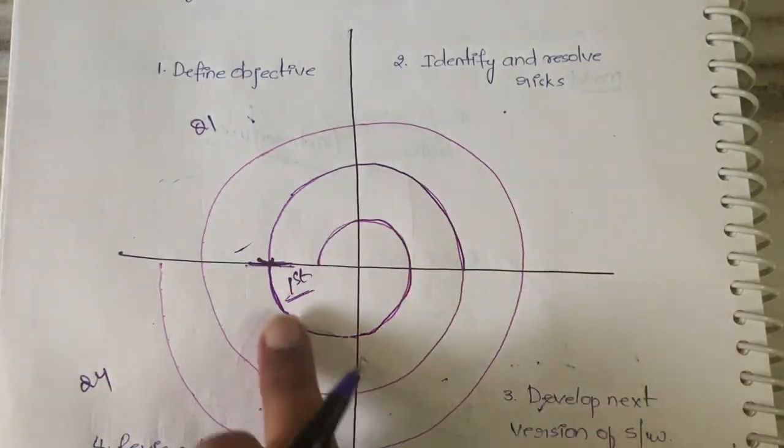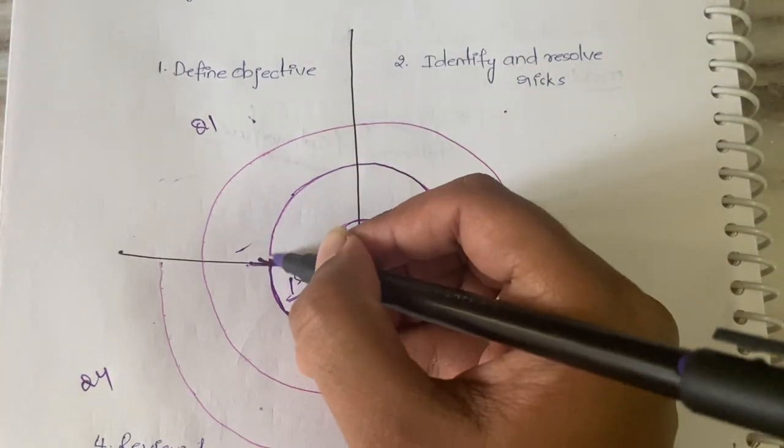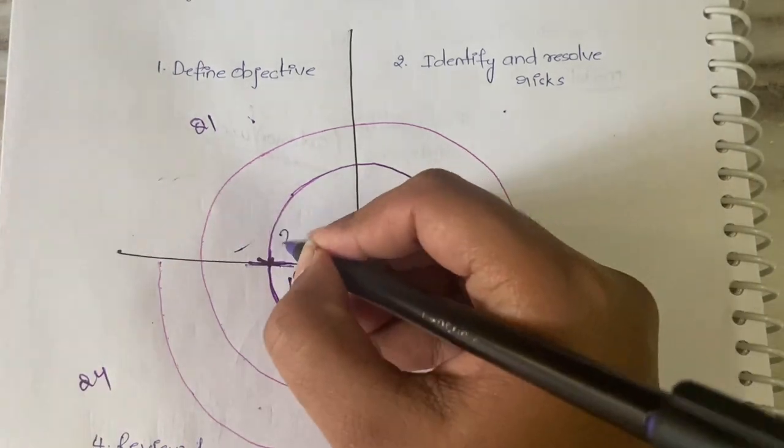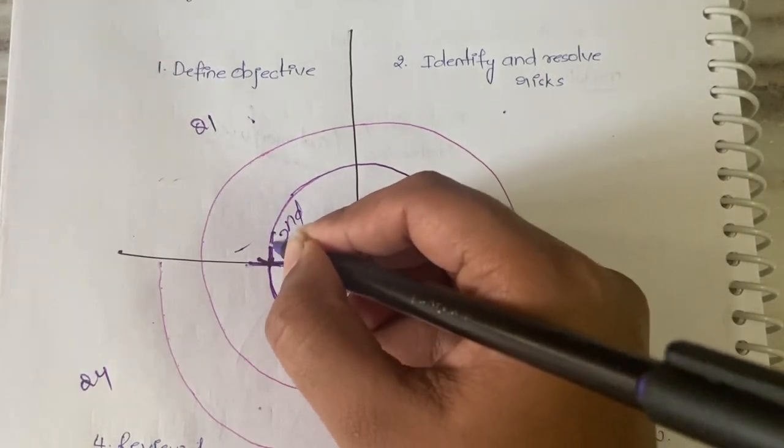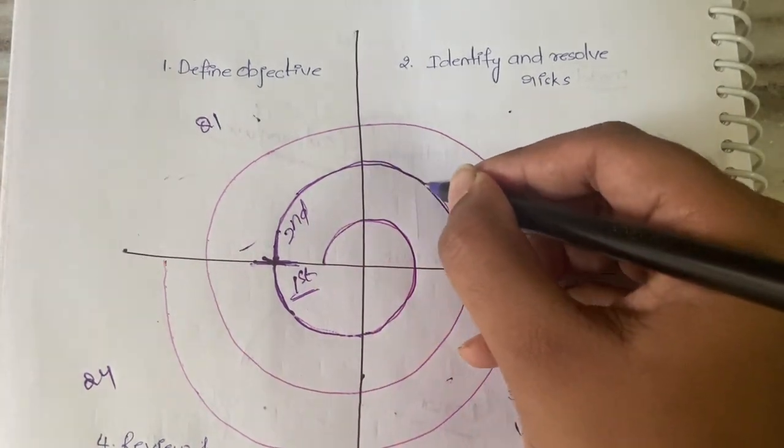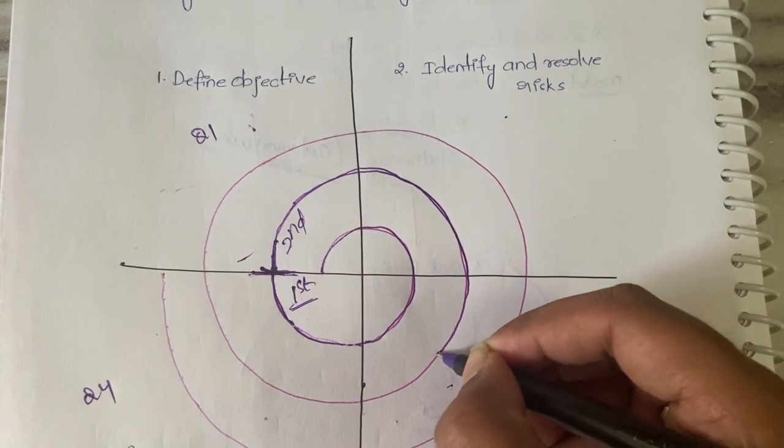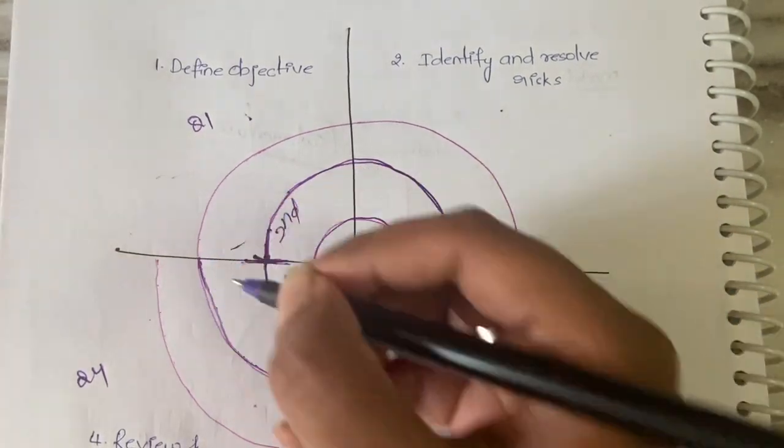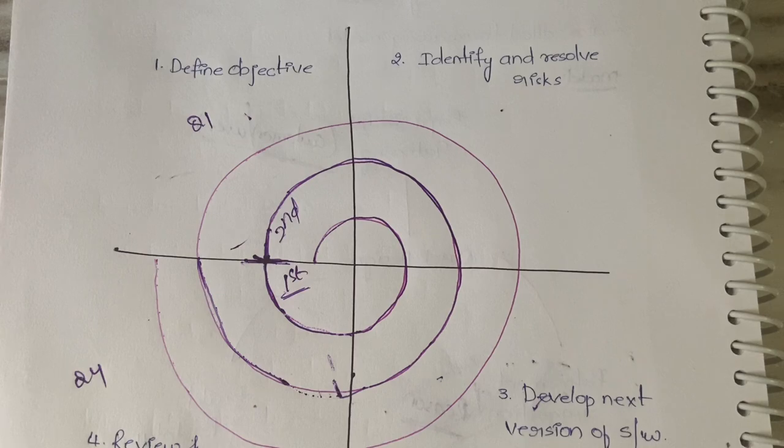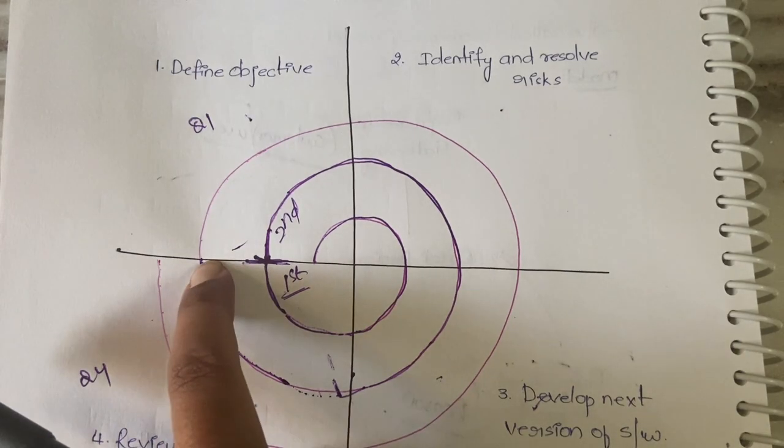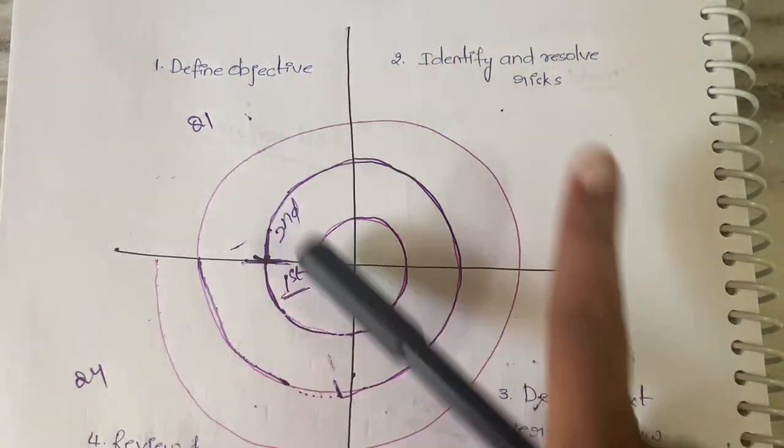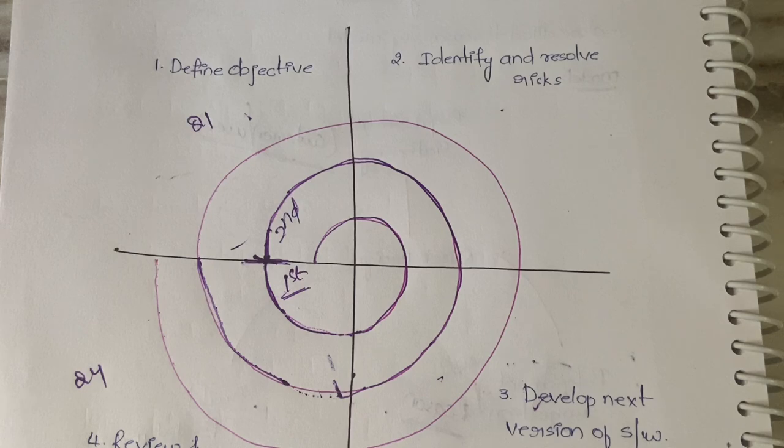It will always start in Q1 and end in Q4. See, it started here and ended here. Again, the second iteration starts here in Q1, travels all the way, and stops here in Q4. Again, customer evaluation will be done. If the customer is not satisfied, one more iteration. Like that, the spiral loop continues until the customer is satisfied.